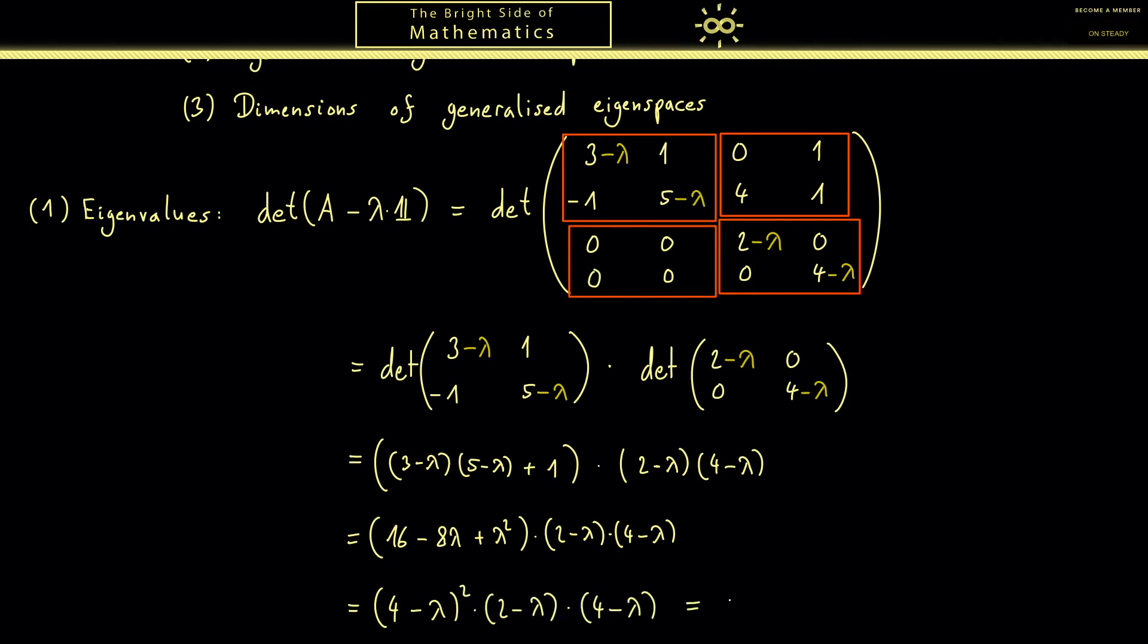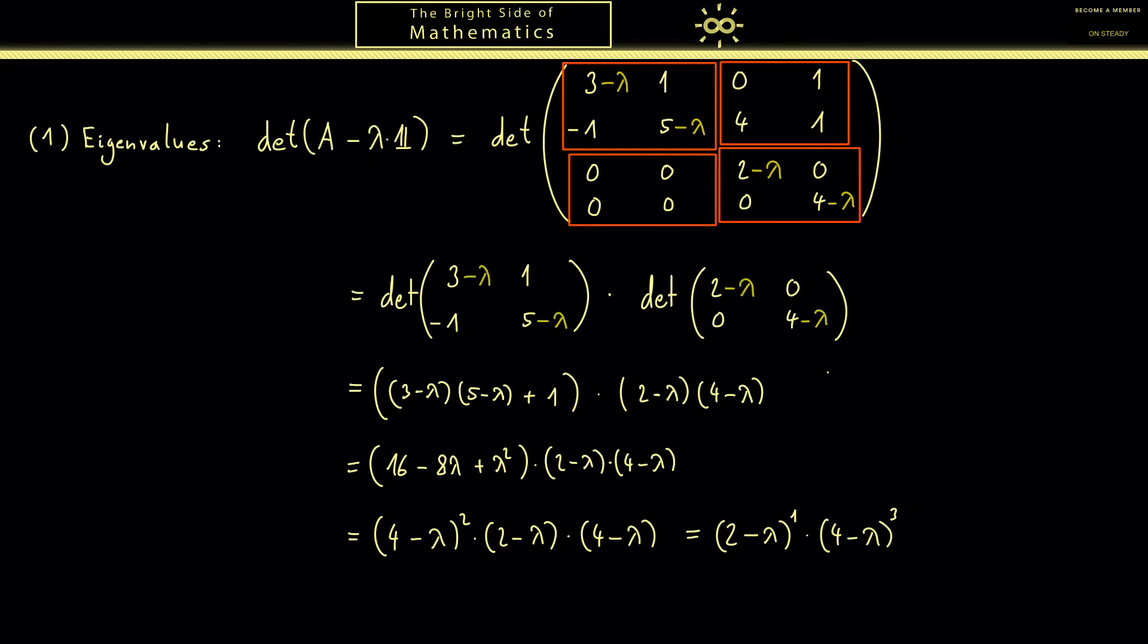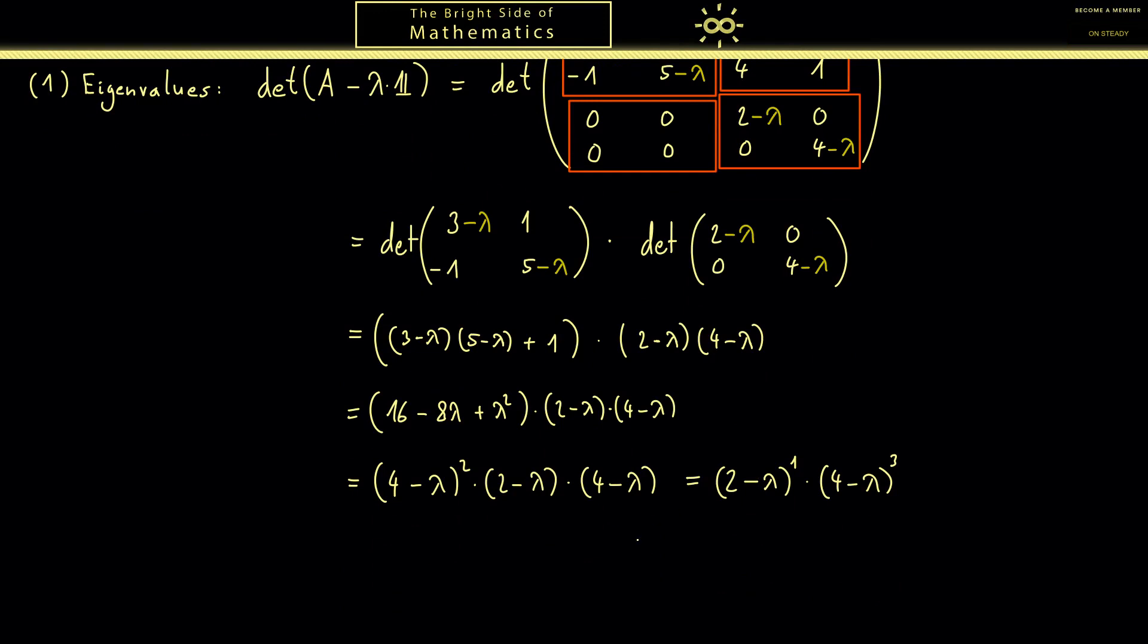And there we have our end result. We have 2 minus lambda to the power 1, so eigenvalue of 2, times 4 minus lambda to the power 3, which means the eigenvalue of 4. And what we also have are now the algebraic multiplicities. So let's denote the smallest eigenvalue, the first eigenvalue, as λ₁ equals 2 and the second one as λ₂ equals 4. Then we see the powers in the characteristic polynomial here and immediately know the algebraic multiplicity, which I denote by α, is for λ₁ just 1 and for λ₂ is 3.